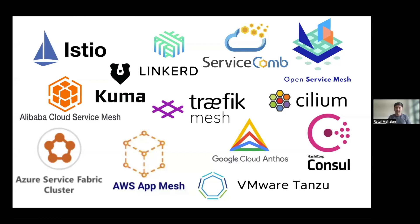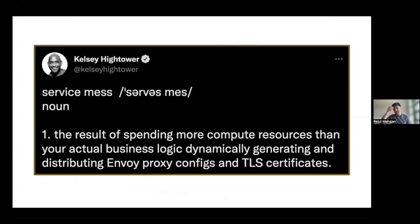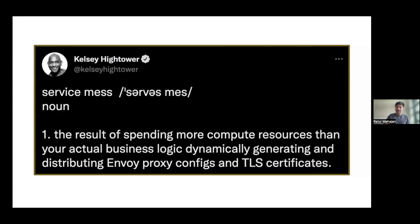That was the happy part of the story. The tricky part is that as these application networks exist today, service meshes have a bunch of fault points. Kelsey, who's at Google, captures it well in one of his tweets: 'service mesh or mess — it's the result of spending more compute resources than your actual business logic dynamically generating and distributing Envoy proxy configs and TLS certificates.' Envoy is one of the most popular ways to build the data plane of services. But it's not to blame Envoy — the issue has to do with the service mesh architecture itself. This is how we are building application networks today.